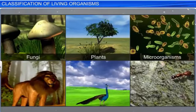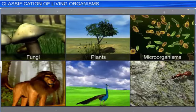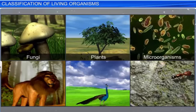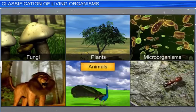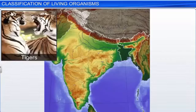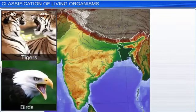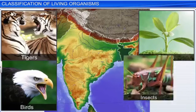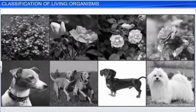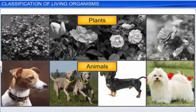Earth is a diverse planet with millions of different types of fungi, plants, microorganisms, and animals. The range and diversity of living organisms increases as we increase the area of our observation. Each different kind of plant, animal, or organism represents a species.